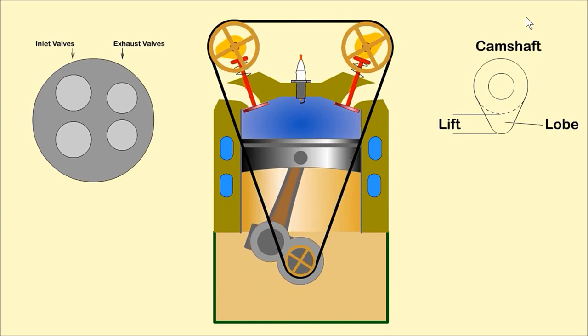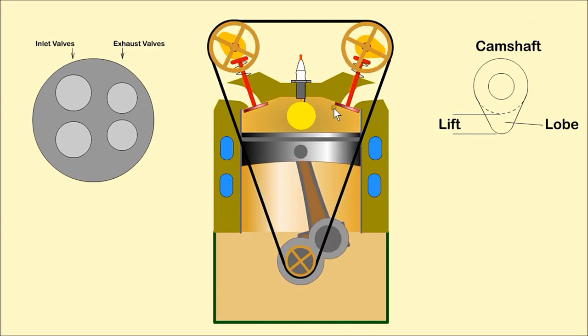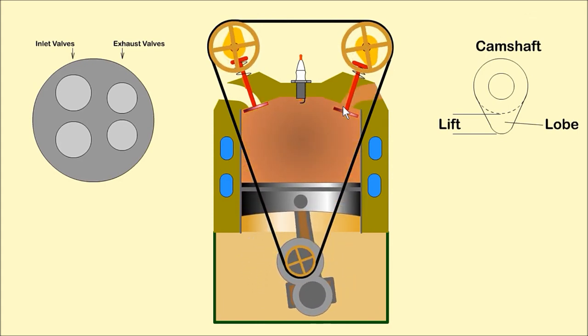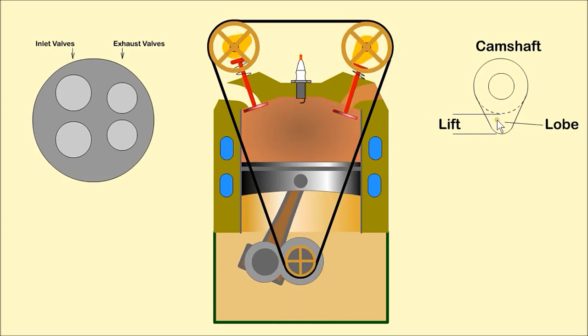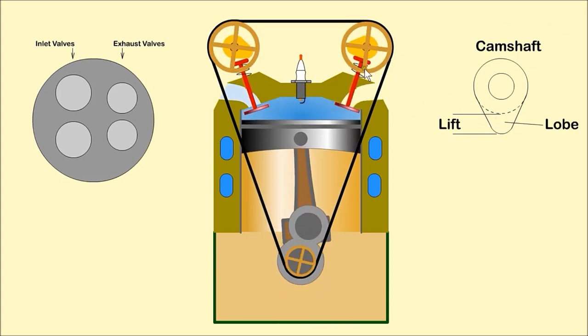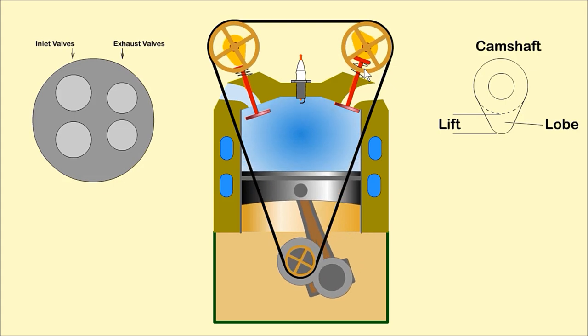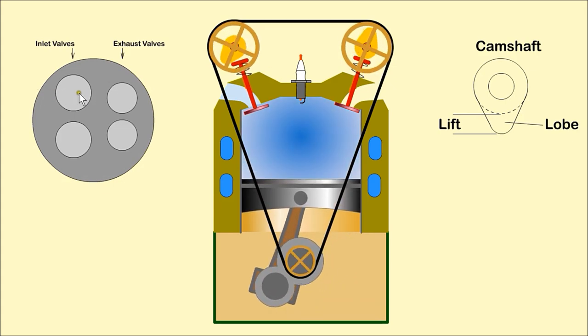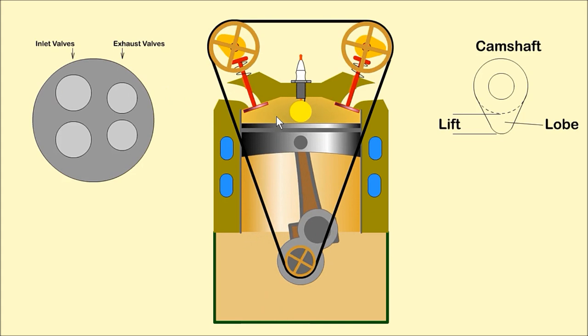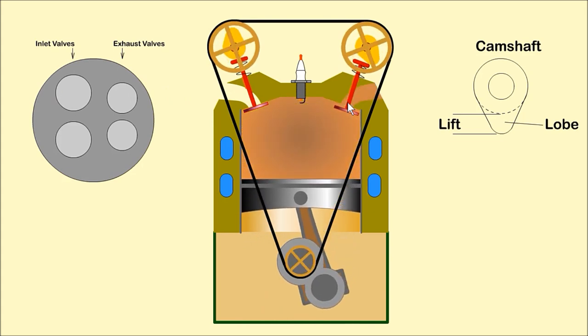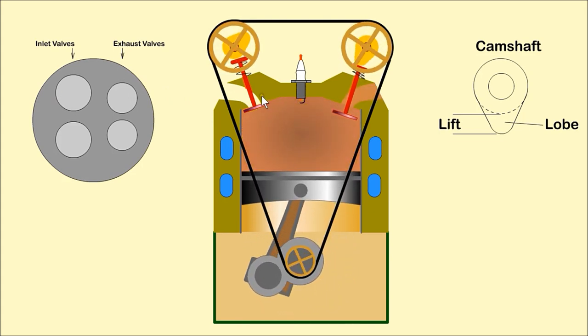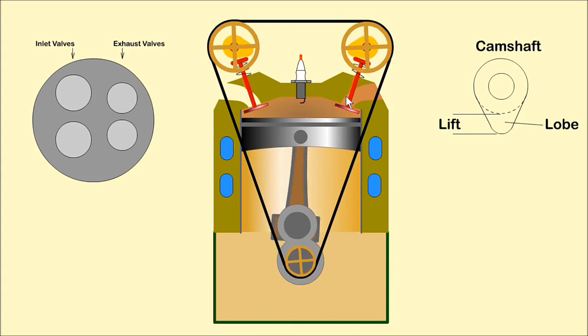Valves are used to allow air enter and exhaust gases exit from the cylinder. They're opened by the lobe of the camshaft and closed by spring pressure. Usually, inlet ports are larger than exhaust ports, as it is more difficult to get air into the cylinder. Early engines had only one inlet and one exhaust valve per cylinder. Modern engines usually have two inlet and two exhaust valves.